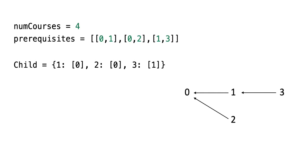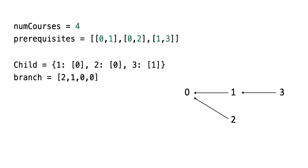As a next step, I will create a list of number of branches. For course 0, there are 2 branches. For course 1, there is 1 branch. For courses 2 and 3, there are no branches. The next step is to create a queue with a list of courses that don't have a dependency. In our example, course 2 and course 3 don't have a dependency, so we are adding 2 and 3 to the queue.